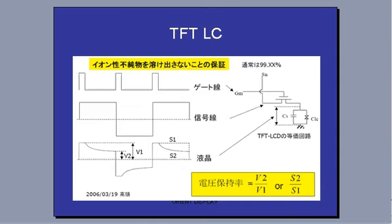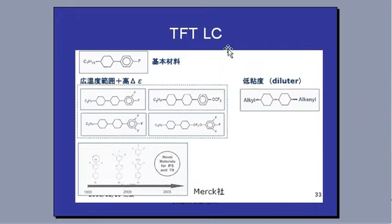That's why the liquid crystal production process needs to be in a very high class clean room and also at a very low humidity level. Sometimes we use nitrogen as a gas, because air normally has moisture inside. This TFT-LC includes a lot of fluoride atoms, and that's why it has very high resistivity.